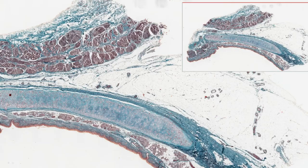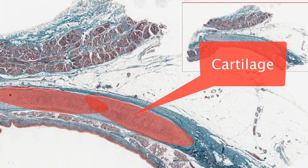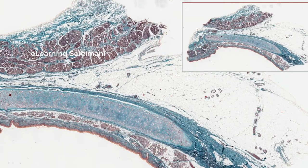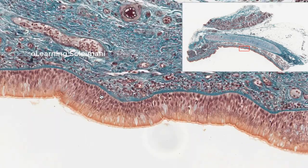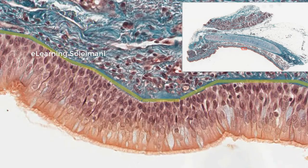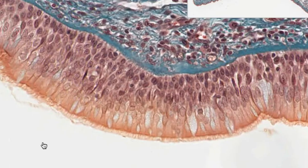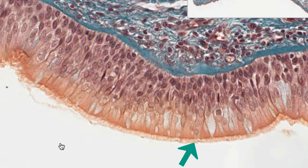The next slide is the trachea, which has a cartilaginous main structure. Its epithelium is pseudostratified ciliated epithelium. With further magnification, the basal membrane can be seen. Three types of cells can be observed: ciliated cells, goblet cells, and basal cells, with different lengths. Their nuclei are located at different levels, giving the impression of stratification.